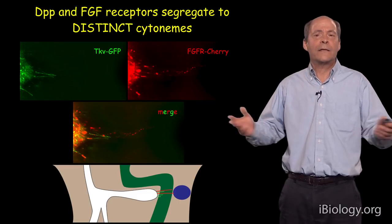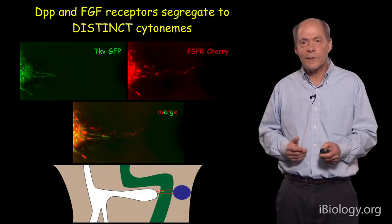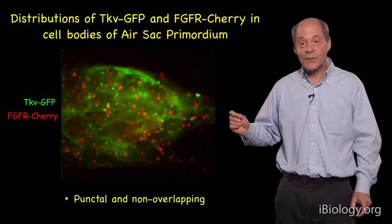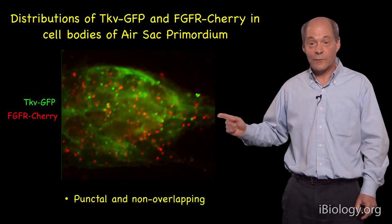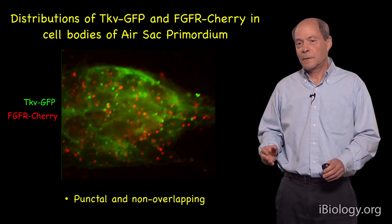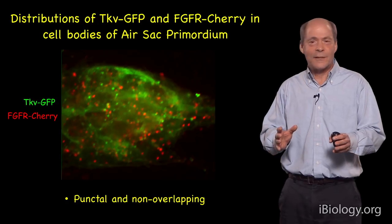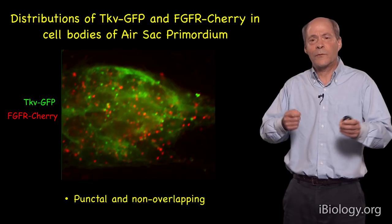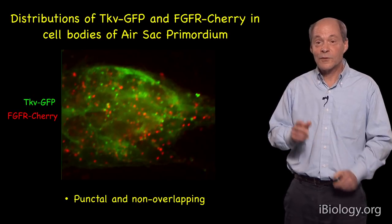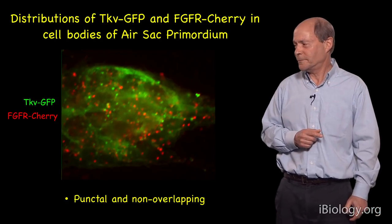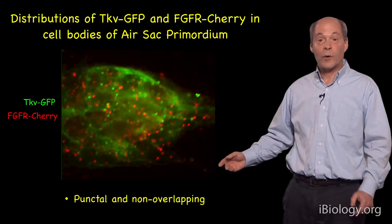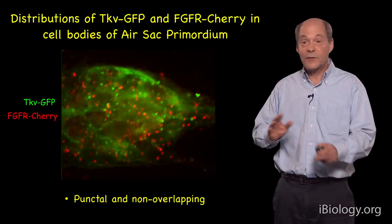Immediately you start to think about what kind of mechanism might segregate these two receptors to two different populations of cytonymes. When we looked in the cell bodies — the ASP cell bodies — we found that the receptors are already segregated into separate locations, into separate puncta or presumably vesicles. This suggests it's not a filter that allows only one type of receptor to enter a particular cytonyme, but rather the cell has already segregated the two receptors to two different compartments. There's some fascinating cell biology there to be studied.